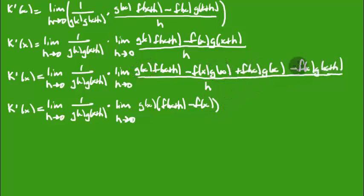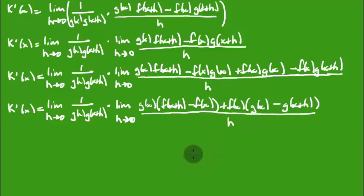Likewise, these two terms have an f of x in common. So I'm going to factor out the f of x. What's left? g of x minus g of x plus h. All over h. Okay, it's a lot of writing going on. And boy, I'm getting my writing bigger on the right side for some strange reason.